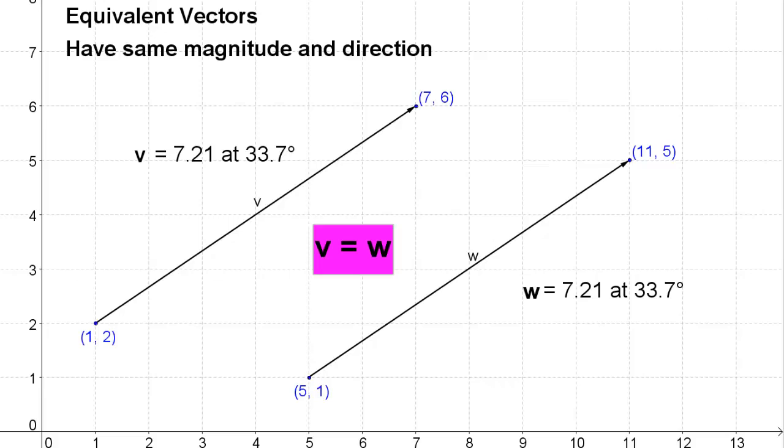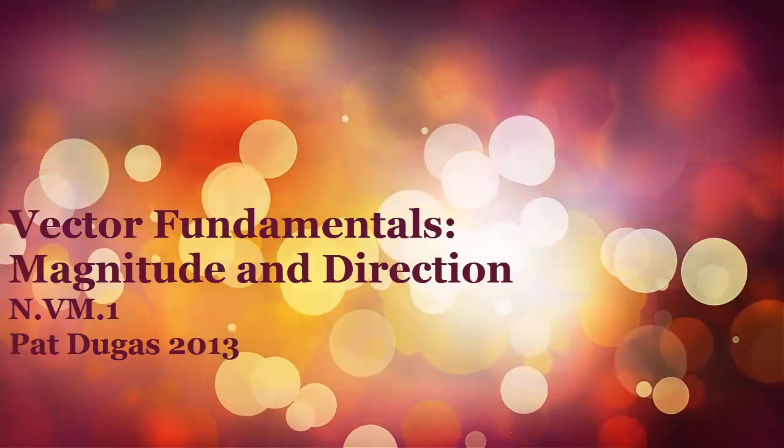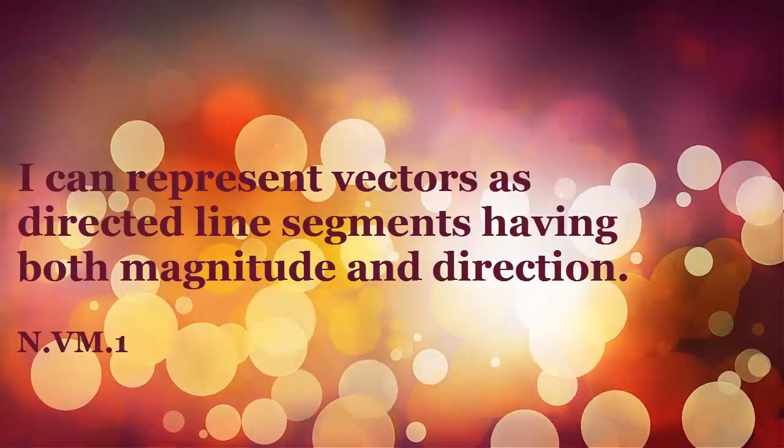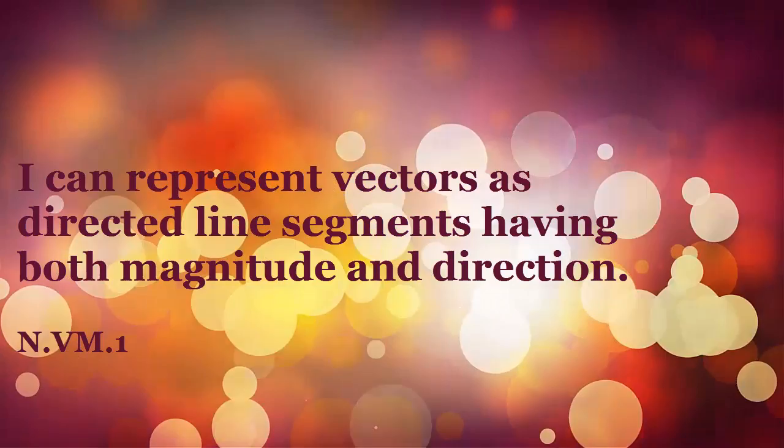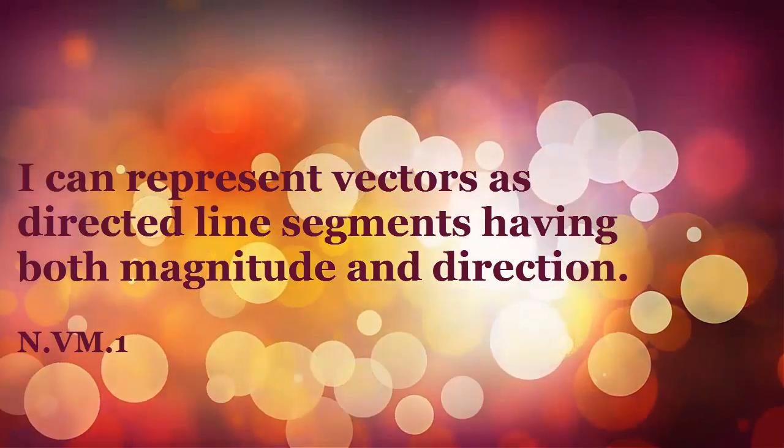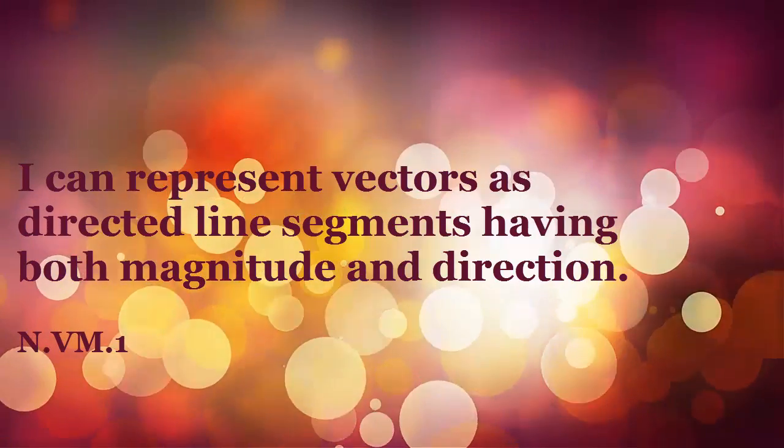So we learned about the importance of vectors, what they are, and what they're composed of. A vector is a directed line segment that has a magnitude and direction. We learned how to compute both of those and to determine that vectors are equivalent when they have the same magnitude and direction.